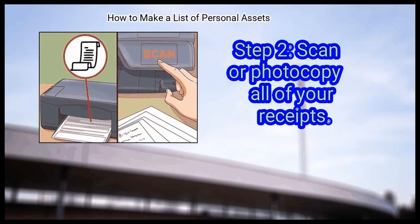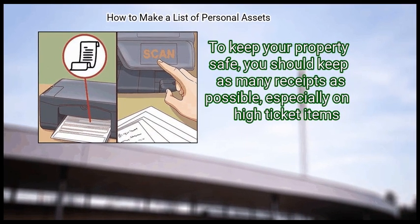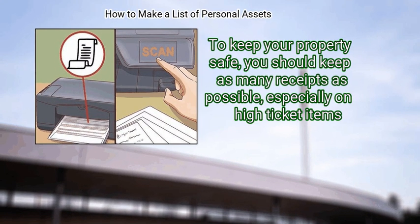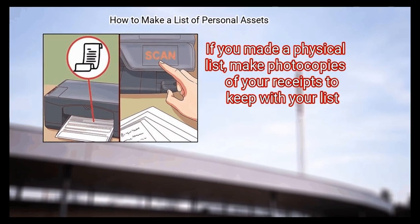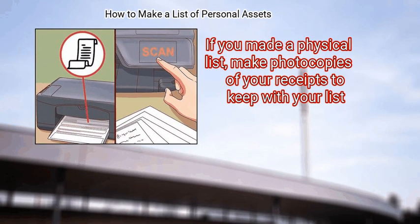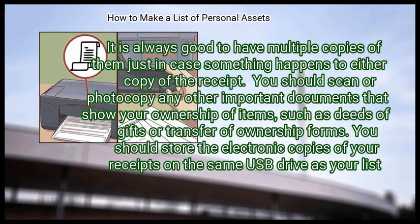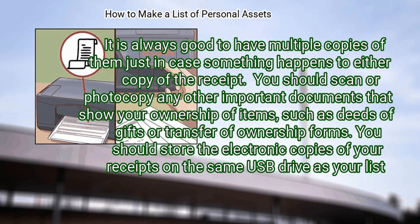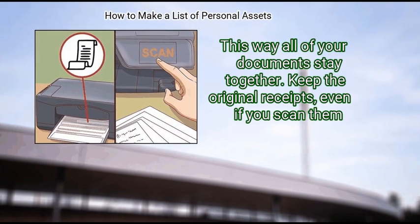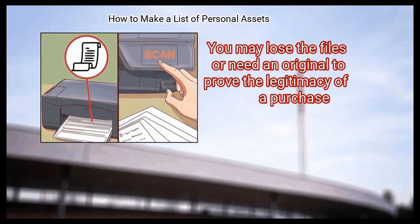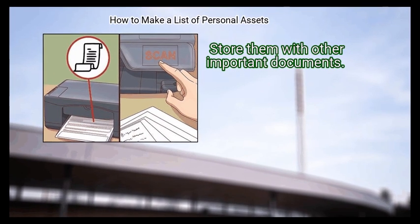Step 2: Scan or photocopy all of your receipts. To keep your property safe, you should keep as many receipts as possible, especially on high-ticket items. If you are using an electronic list, scan your receipts so you can have electronic copies of them. If you made a physical list, make photocopies of your receipts to keep with your list. It is always good to have multiple copies in case something happens. You should also scan or photocopy any other important documents that show your ownership of items, such as deeds of gifts or transfer of ownership forms. Store the electronic copies of your receipts on the same USB drive as your list so all documents stay together. Keep the original receipts even if you scan them, and store them with other important documents.